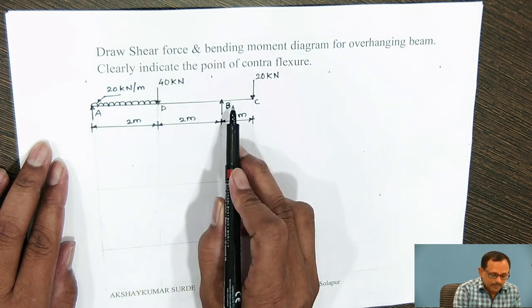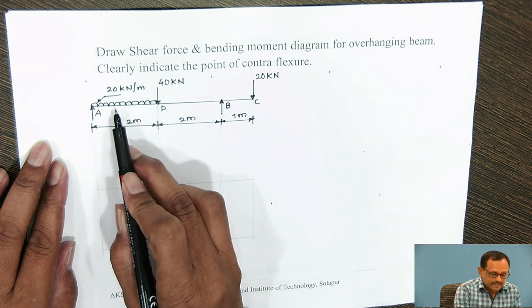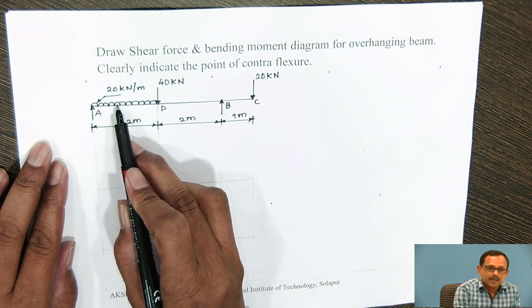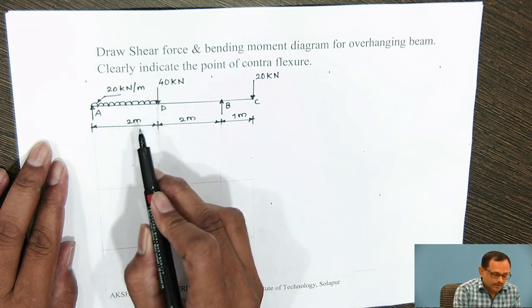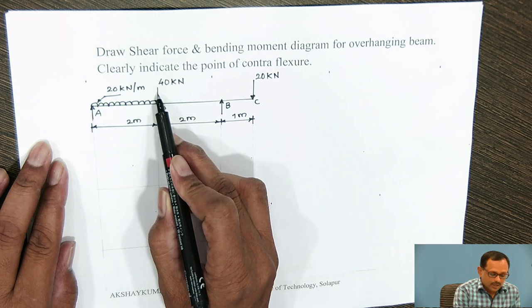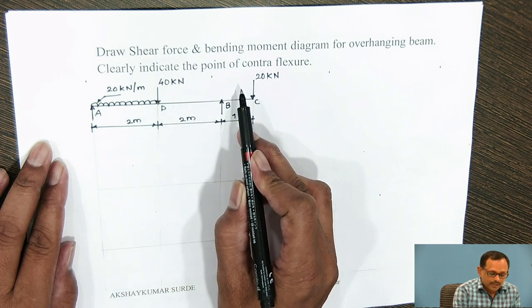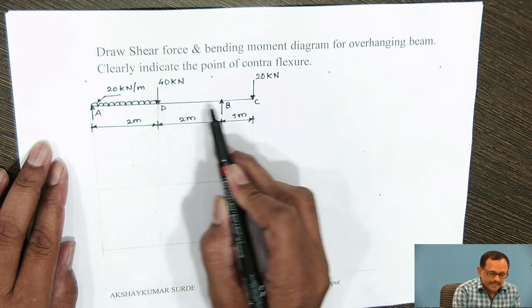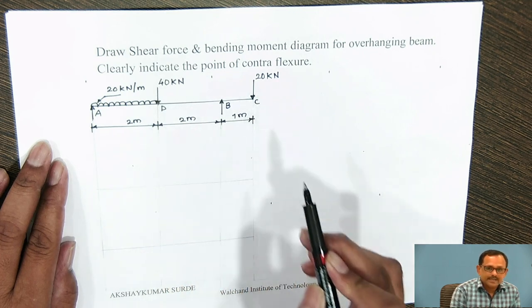The overhang beam carries UDL 20 kN per meter over a span of 2 meters, along with point loads at D and C.